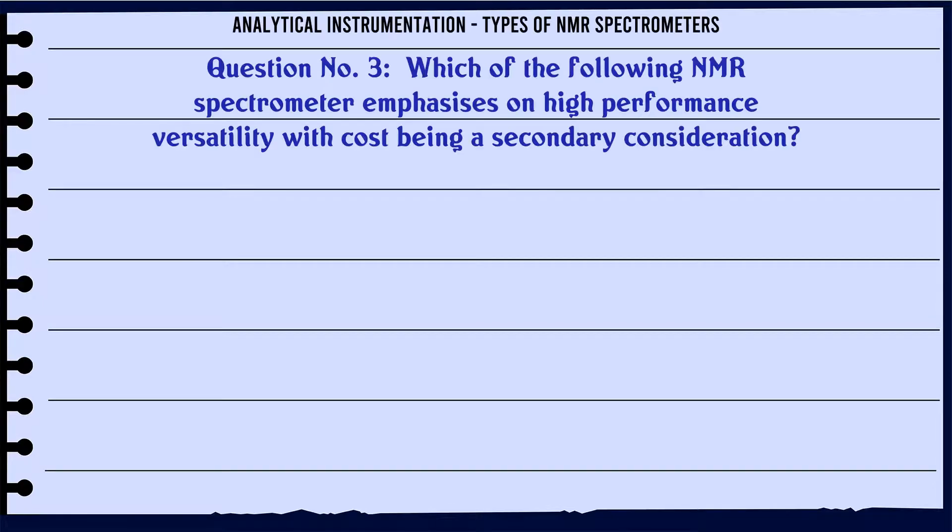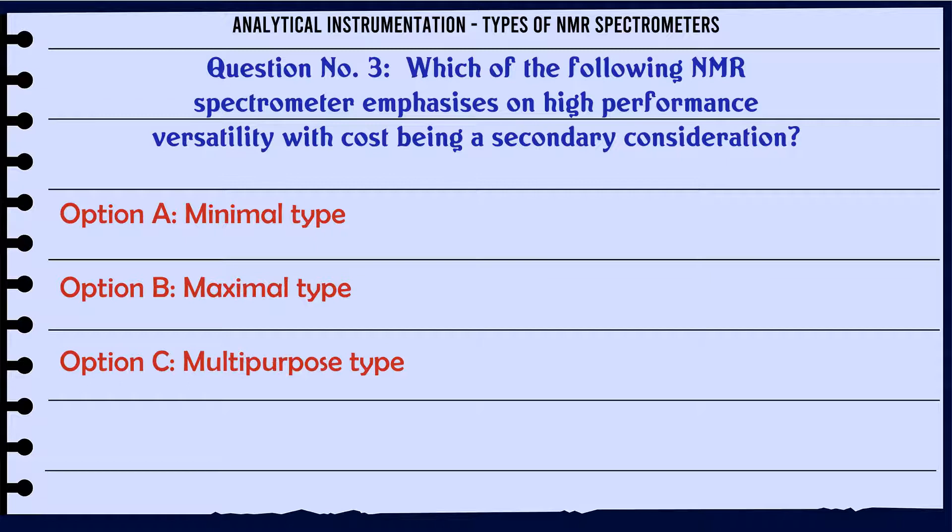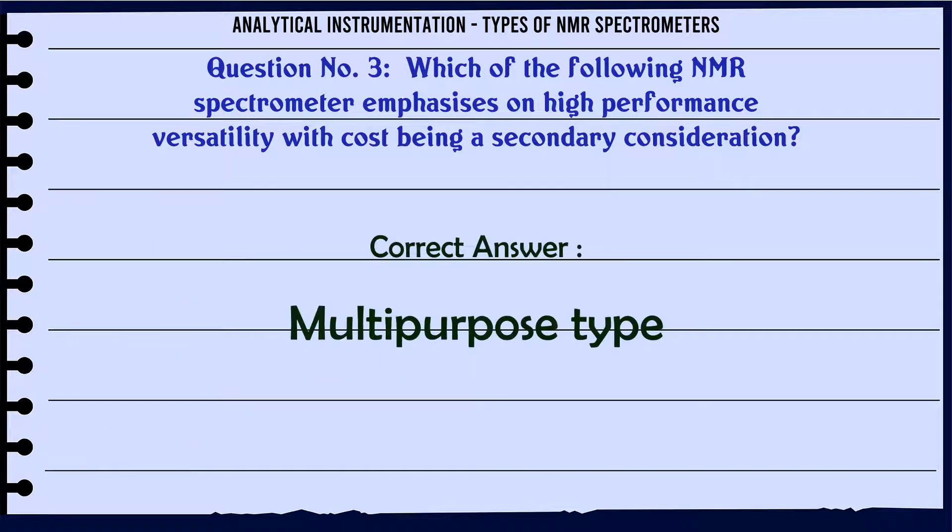Which of the following NMR spectrometer emphasizes on high performance versatility with cost being a secondary consideration? A. Minimal type. B. Maximal type. C. Multipurpose type. D. Wide line type. The correct answer is Multipurpose type.